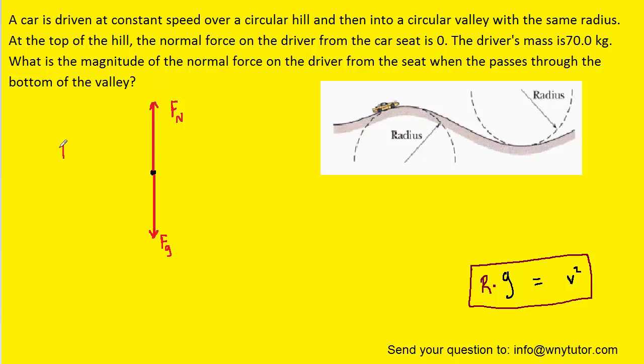We can go ahead and define in this case the upward direction as being the positive direction. And then we'll use Newton's second law again. Notice we are using the centripetal acceleration. Also notice that in this case there are two forces: we have the positive normal force and the negative gravitational force.